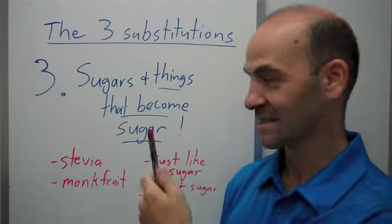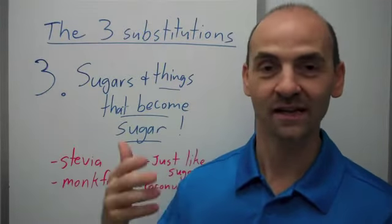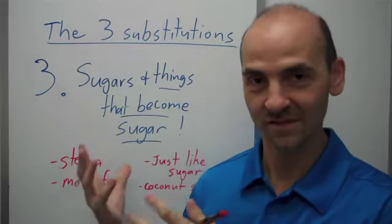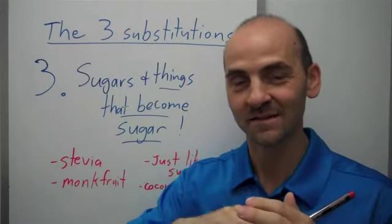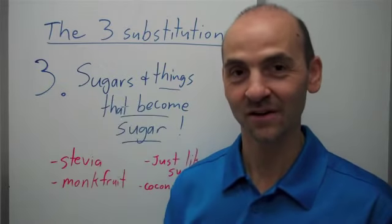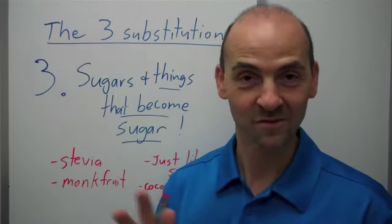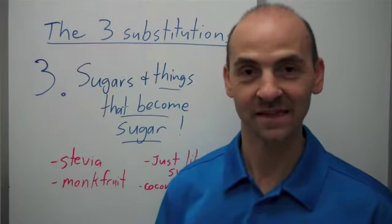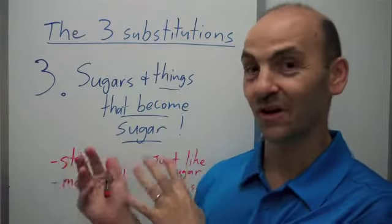And obviously you can get coconut sugar. If you get organic coconut sugar from coconut you're gonna get a fairly good source and that might have a slower glycemic load. Organic raw honeys might also be a good option as well.